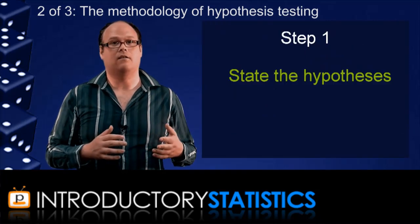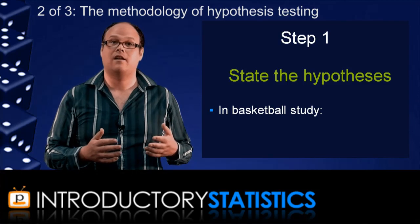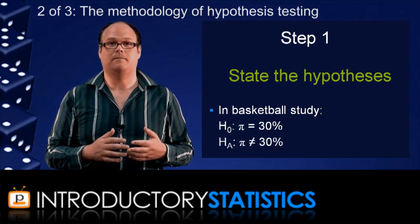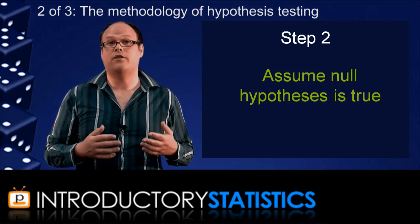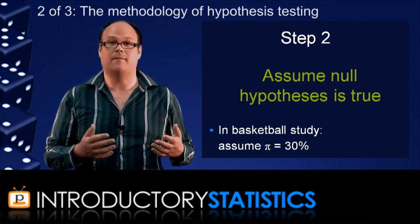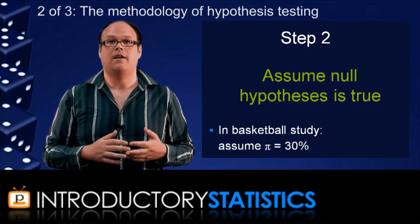In the basketball study, these were the hypotheses. Next, we assume that the null hypothesis is true. So we assume that the proportion of fans that are female is 30%. Next, we choose a level of significance for the test.